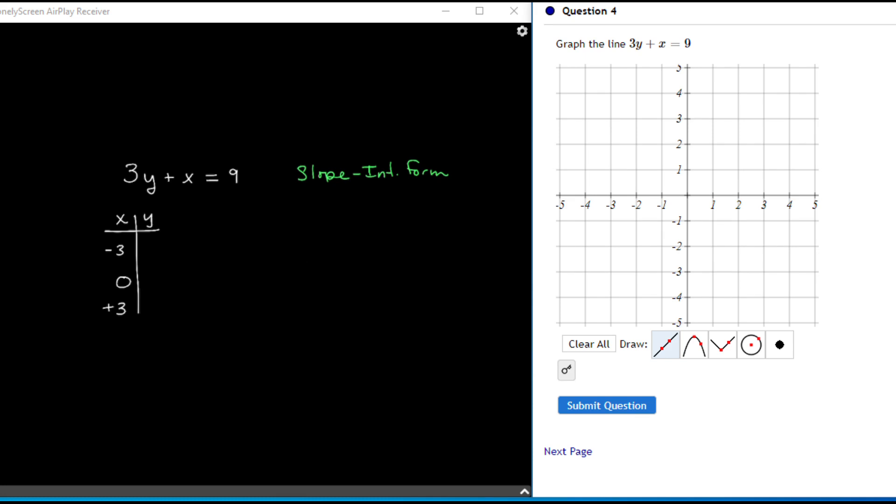Because I chose x equals negative 3, I'm going to replace this value and solve for y. So I have 3y minus 3 equals 9. I add 3 to both sides, and I am left with 3y equals 12. Y equals 4.